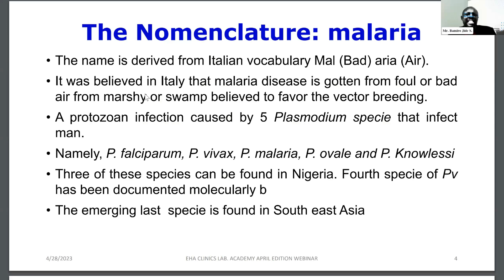Three of these species can be found in Nigeria: P. falciparum, P. malariae, and P. ovale. A fourth species, P. vivax, has been documented in Nigeria molecularly; however, it has not been documented microscopically. And P. knowlesi, as mentioned, actually emerged from Southeast Asia.